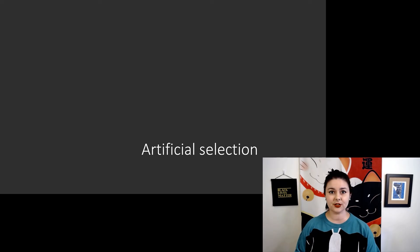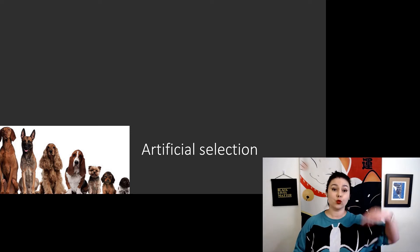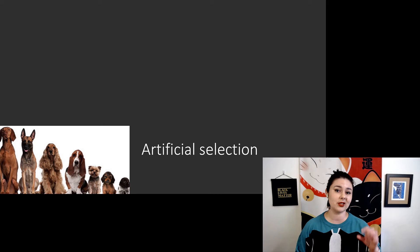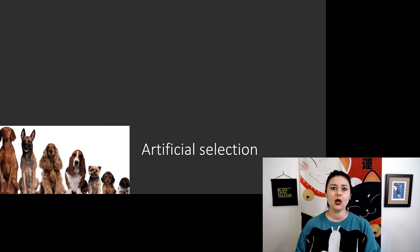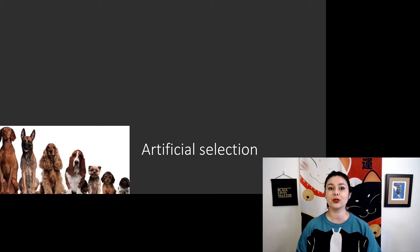Probably the easiest and most obvious example to understand is dogs, because we have selected for so many different forms. We have really big Great Danes, which are also really fast, but we also have very tiny Chihuahuas. We have Dachshunds, which are bred specifically to have short legs so they can go into different burrows to help with hunting. There are also specialized wolfhounds and specialized herding dogs. Think of all the different features that different breeds have.